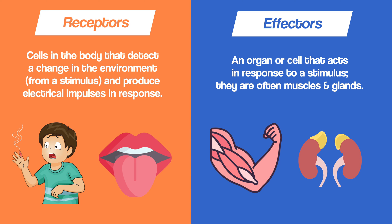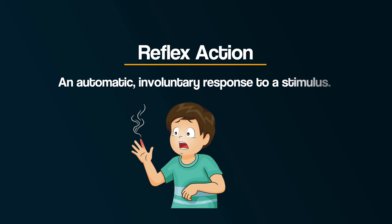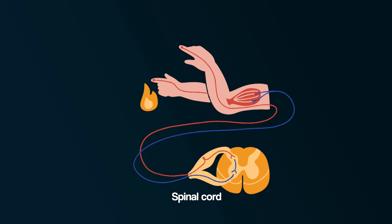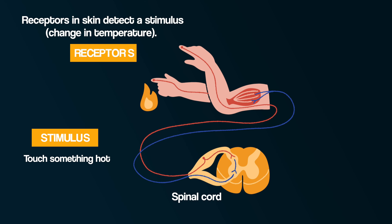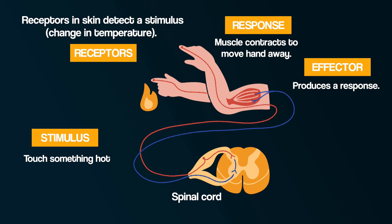Effectors might be a muscle contracting to move an arm, or a gland like the adrenal gland releasing a hormone like adrenaline into the blood. This brings us to the reflex action — an automatic, involuntary response to a stimulus. For example: you touch a hot pan (stimulus), receptors in the skin detect the change in temperature, and the effector produces a response — your muscle contracts to move your hand away.